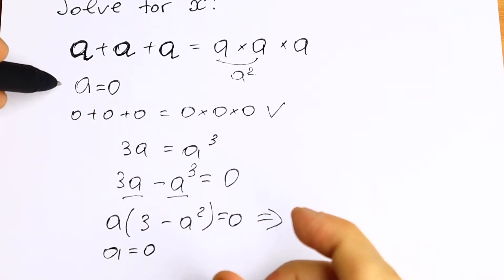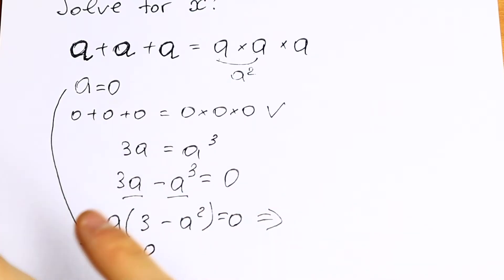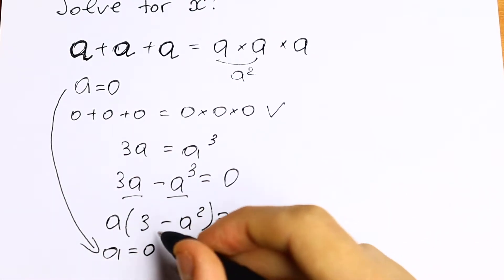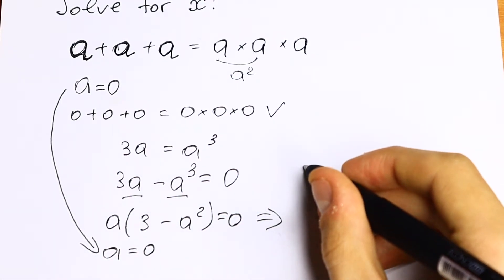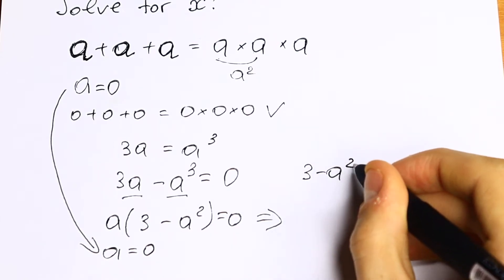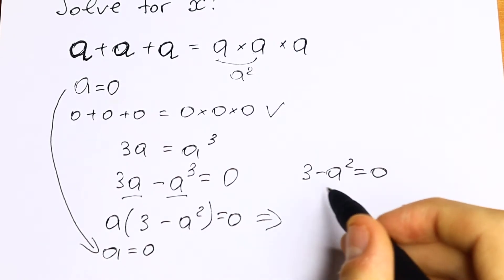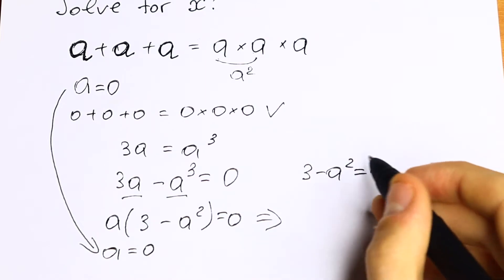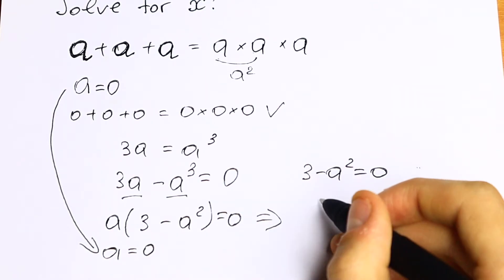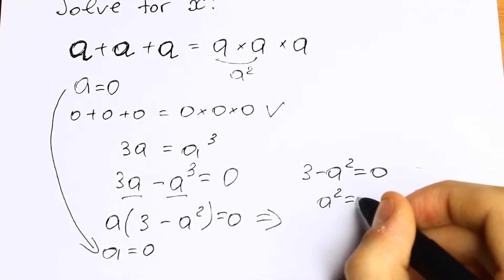As you can see this one and this one we found. And let's find another one: 3 minus a squared. So 3 minus a squared equal to 0. And how can we solve it? Let's bring this 3 on the right or a squared on the right. We will have that a squared equal to 3.